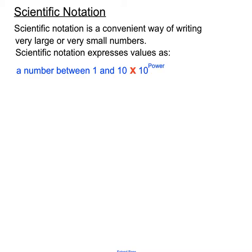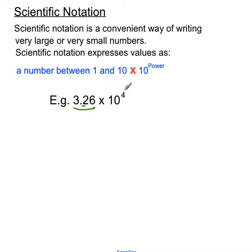Here's an example of a scientific notation expressed value. 3.26 is a number between 1 and 10, and then it's being multiplied by 10 to the power of 4. So that's how we express a value in scientific notation.